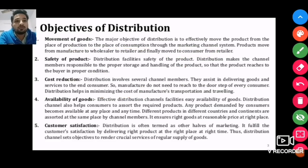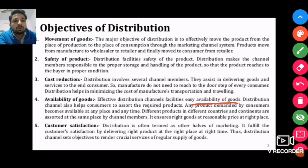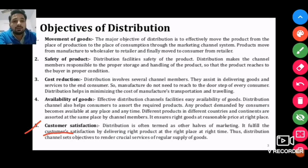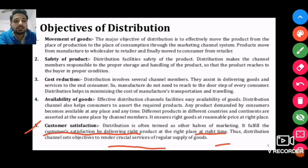Availability of goods is just as important as movement of goods, because effective distribution happens when goods are easily available. Distribution channels help consumers get the required products at any place and any time. One of the main objectives of place mix is this availability. Customer satisfaction is also fulfilled when the product reaches the customer at the right time, right place, and right condition. Thus distribution channels set objectives to render crucial services of regular supply of goods.